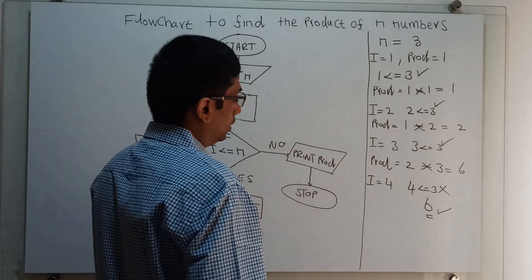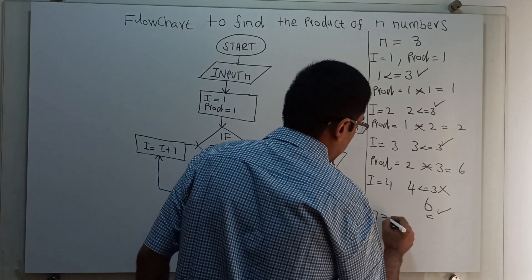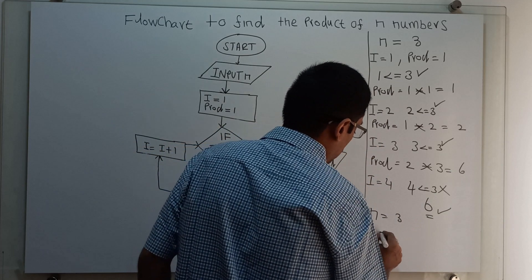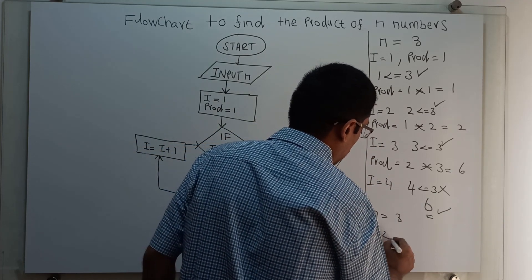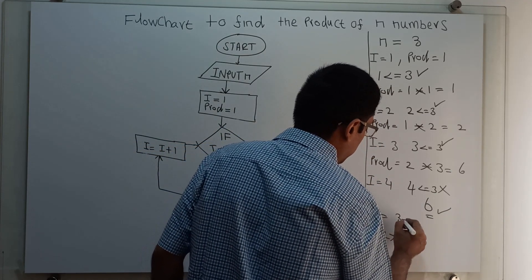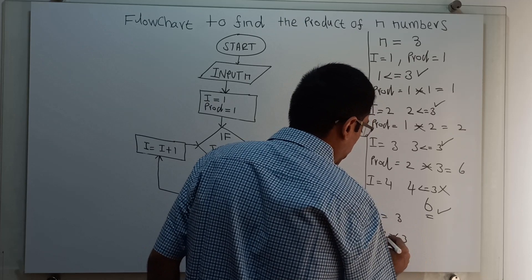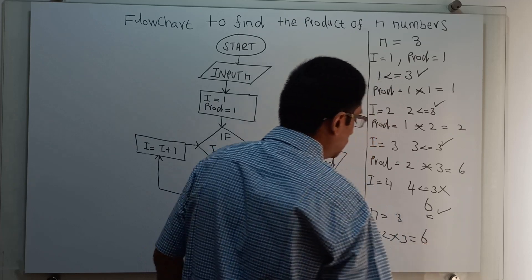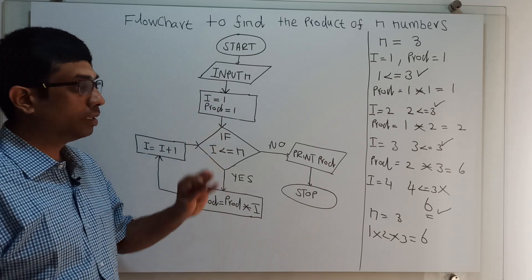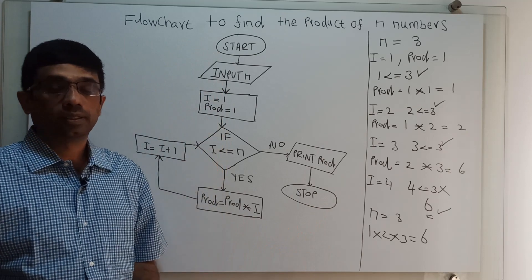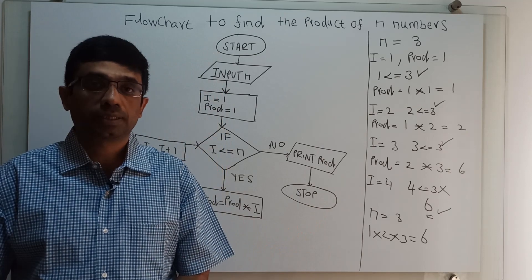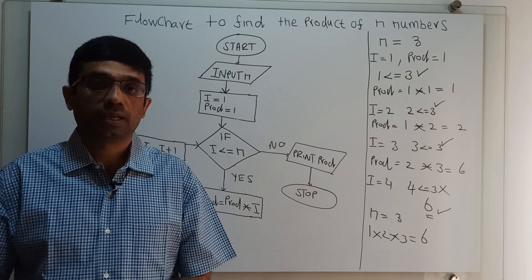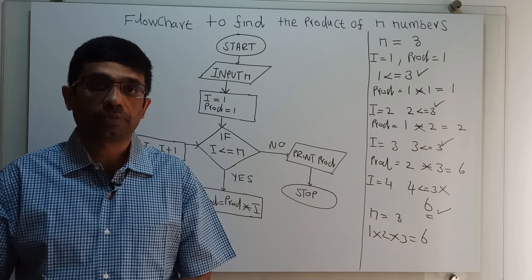The value of n equal to 3 means the multiplication of 1 into 2 into 3 — that is, up to the given range n: 1 into 2 equals 2, and 2 into 3 equals 6. So the flowchart is working perfectly. Please subscribe to my channel, share, comment, and press the bell button. Thank you.